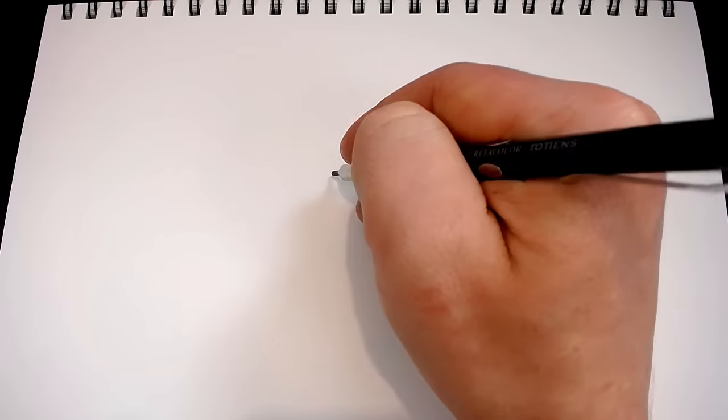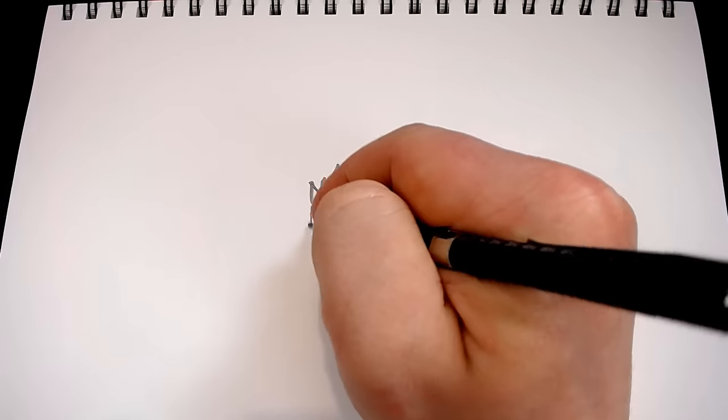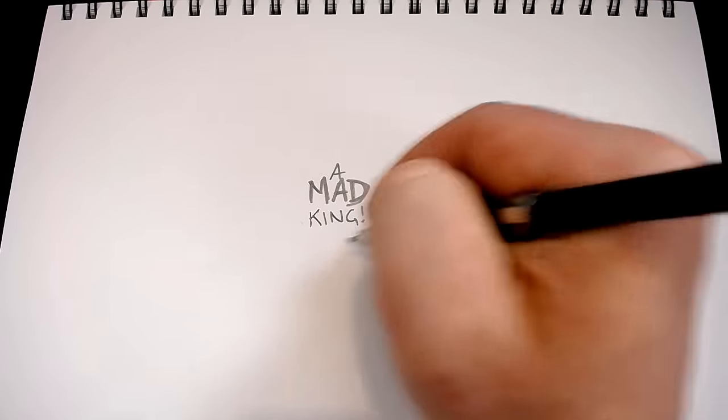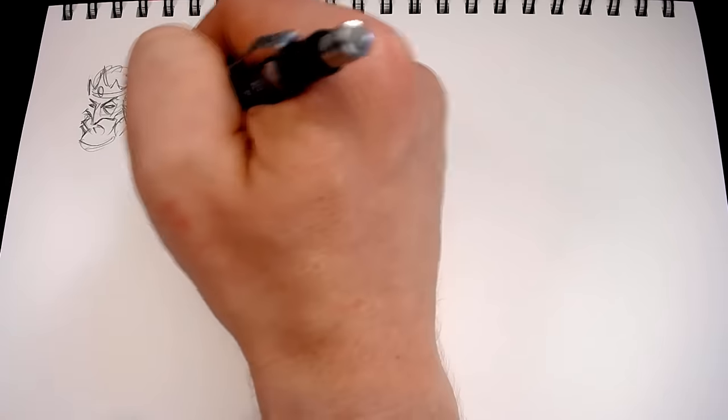Tip number three is learn to brainstorm sketch. To demonstrate this, I'm going to try and come up with a character that I like, giving myself the assignment of creating a mad king character. It's a very loose and open thing to interpret and could take on many forms, so I'm just going to brainstorm sketch my way through it.